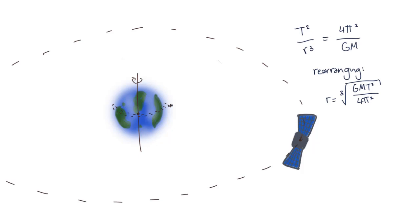Rearranging, we find that r is equal to the cube root of the universal constant of gravitation times mass times the period squared divided by 4 pi squared. If we plug this into our equation, we find that the radius of the orbit will be 42,000 kilometres.